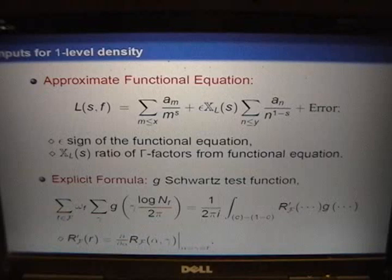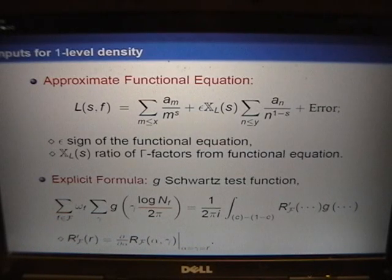How is the L-function ratios conjecture used? The two key ingredients are the approximate functional equation, basically writing the L-function as two sums with a nice weighting factor plus some error term.